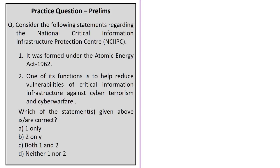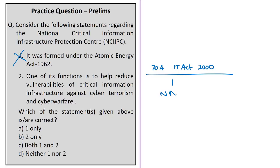The next question is about the National Critical Information Infrastructure Protection Centre. Statement 1 states it was formed under the Atomic Energy Act of 1962 — this is incorrect; it was created under Section 70A of the Information Technology Act of 2000. Section 70A of the IT Act deals with the National Nodal Agency for critical information infrastructure protection. Eliminate options A and C. Statement 2 states one of its functions is to help reduce vulnerabilities of critical information infrastructure against cyber terrorism and cyber warfare — this is correct. The correct answer is Option B — Statement 2 only.